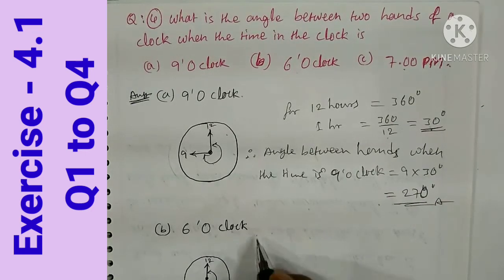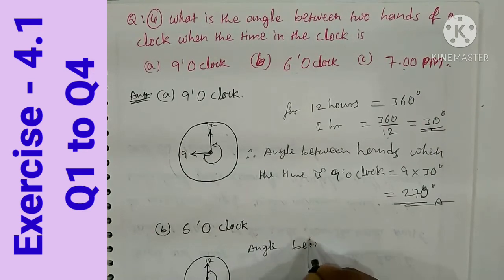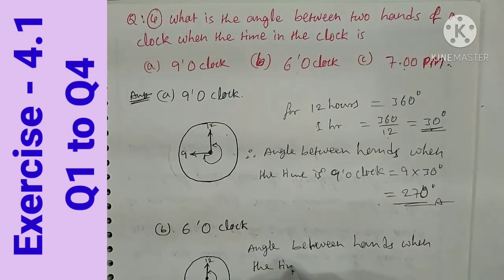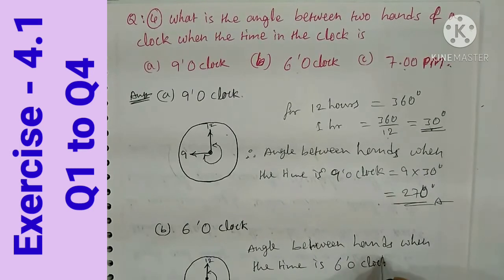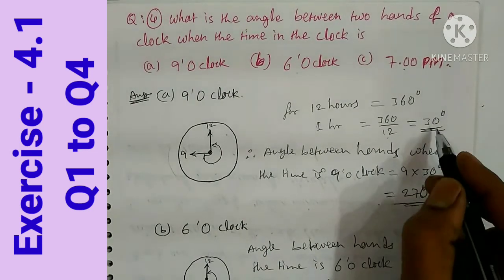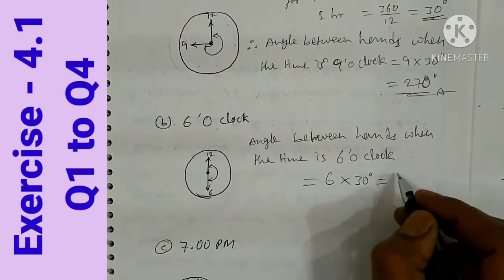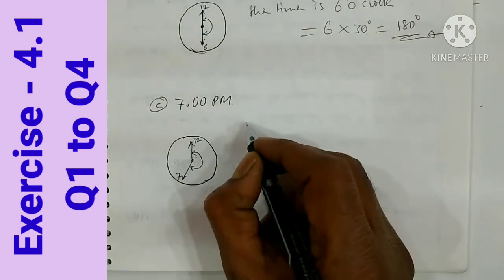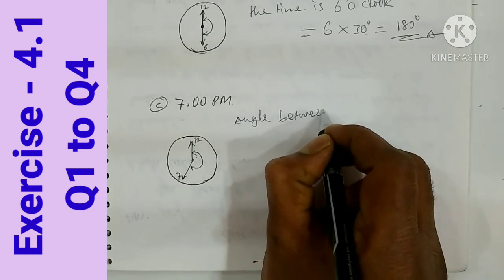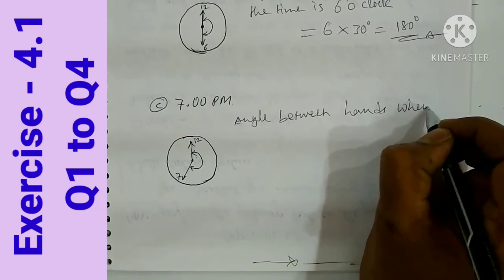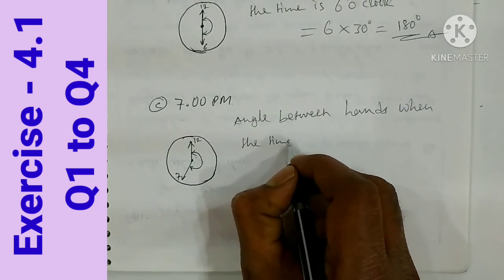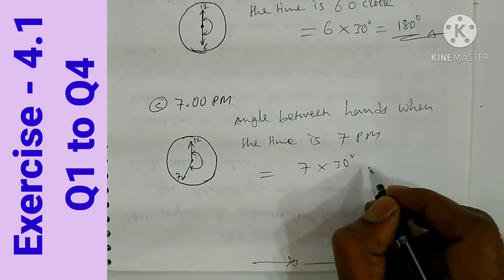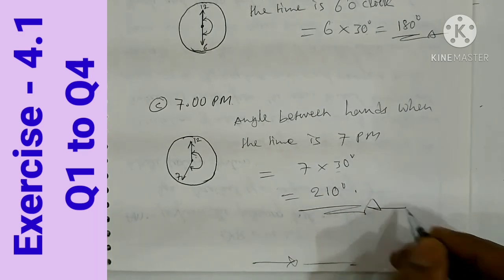For six o'clock: the angle between hands equals 6 hours into 30 degrees equals 180 degrees. For seven o'clock: the angle between hands equals 7 hours into 30 degrees equals 210 degrees. This exercise is now complete.